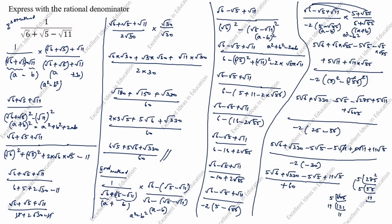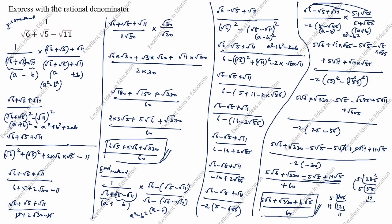Collecting like terms: minus 5 root 5 plus 11 root 5 gives 6 root 5. The 5 root 11 and minus 5 root 11 cancel. So the final answer is 5 root 6 plus root 330 plus 6 root 5, all divided by 60. You see the first method answer and the second method answer are the same, but the concept is different. Whichever method is easiest for you, you can follow.